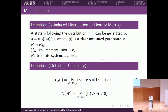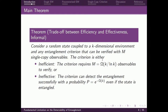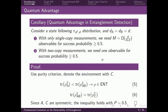For the entanglement witness, the detection capability is the probability of having a negative expectation value. Now we can present our main theorem, which establishes a trade-off between the efficiency and effectiveness of entanglement detection. Consider a random state coupled to a K-dimensional environment — that is, our pi_{dk} distribution — and any entanglement criterion that can be verified with m single-copy observables. The criterion is either inefficient, requiring almost linearly K observables to verify, or ineffective, meaning it can detect entanglement with probability that exponentially decays with K, even if the state is entangled.